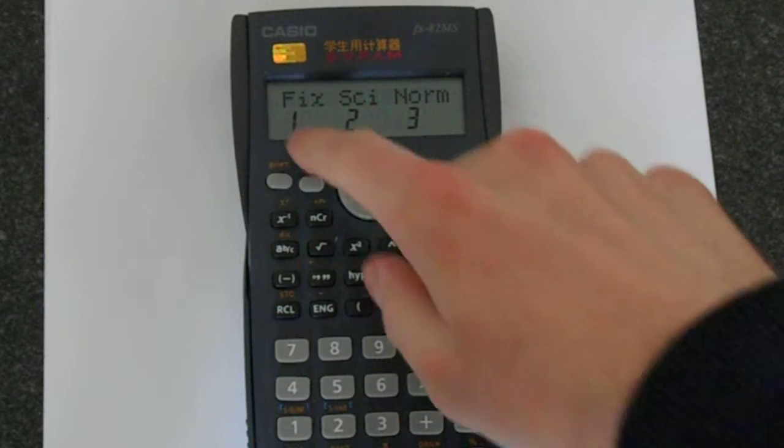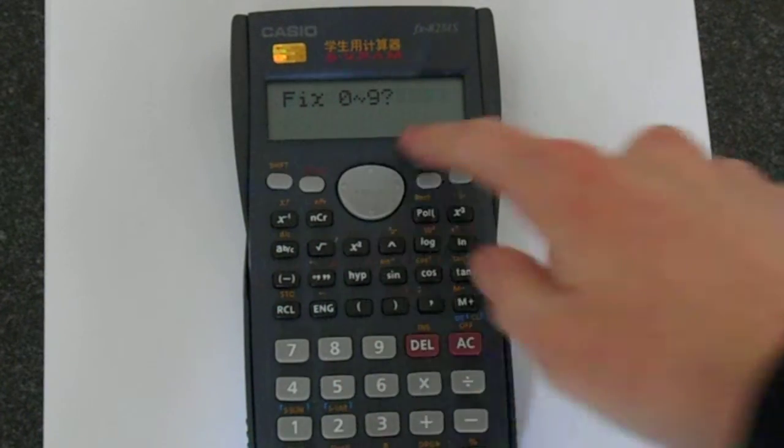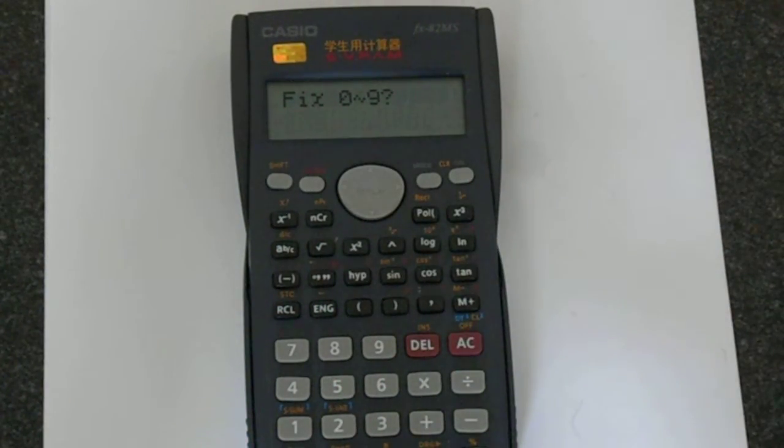I want to do the fix command here, so press fix. Then it gives us this option 0 and 9. If we enter a number between 0 and 9, that will specify the number of decimal places the calculator works to. That will do some rounding.